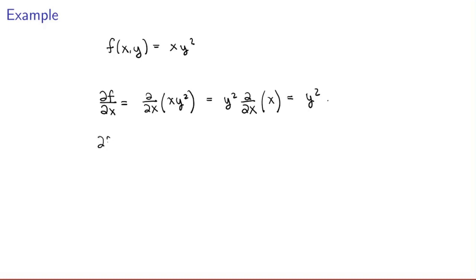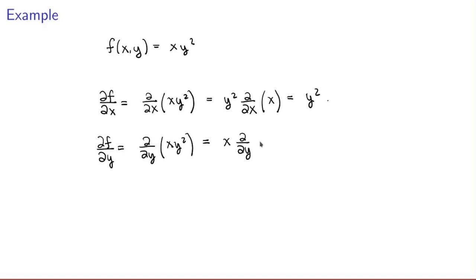Similarly, to calculate the partial derivative of f with respect to y: I want the derivative of xy² with respect to y. I can treat x as a constant, pull it out of the derivative, and I end up with the derivative of y², which is 2y. So the result is 2xy.